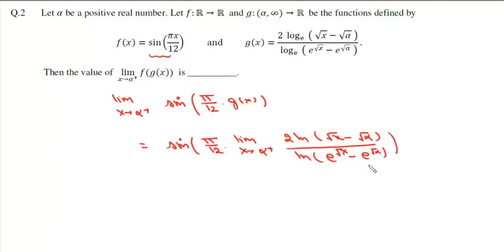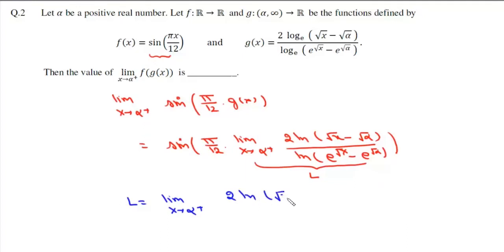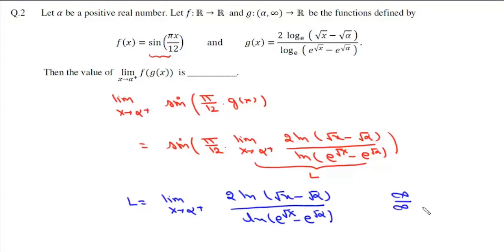We have to simplify this limit, so we'll solve it separately — call this limit L. So L is the limit as x tends to alpha positive of 2 log(√x − √α) divided by log(e^√x − e^√α). This is an infinity over infinity form, so we can apply L'Hôpital's rule.